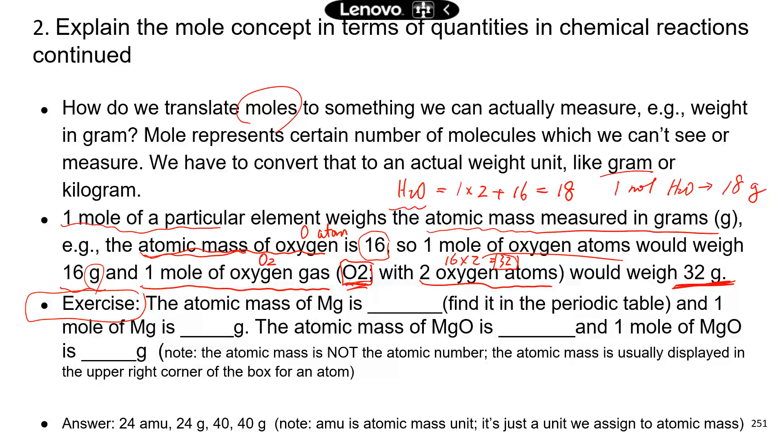All right. How about this exercise question? So I'll give you about 10 seconds. If you look at the periodic table, the atomic mass for this element, magnesium, is 24. So one mole would just be 24 grams. The atomic mass of magnesium oxide is going to be the atomic weight for magnesium, which is 24, plus the atomic weight for oxygen atom, which is 16. So that total is 40. So one mole of magnesium oxide is going to weigh 40 grams. And that's it. Now I do have a note here. The atomic mass is not the same as the atomic number. Okay? So when you look at the periodic table, do not use the atomic number. Use the atomic mass.